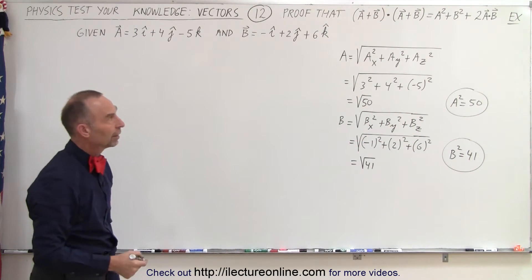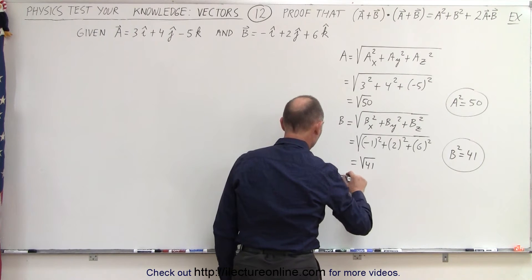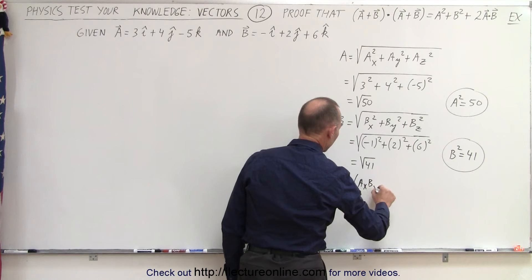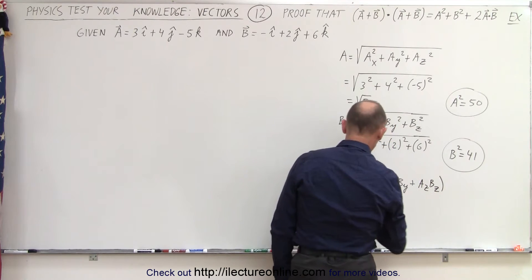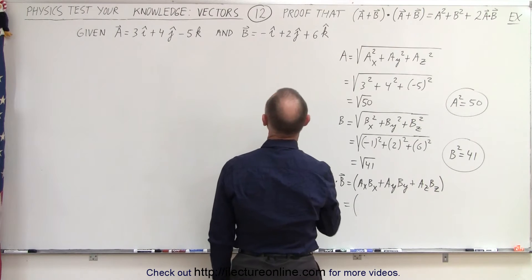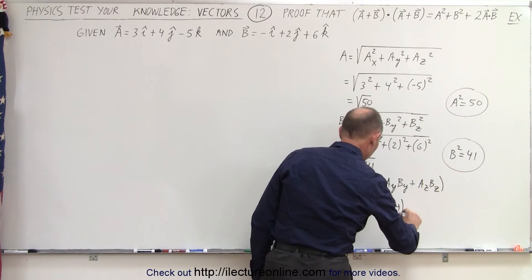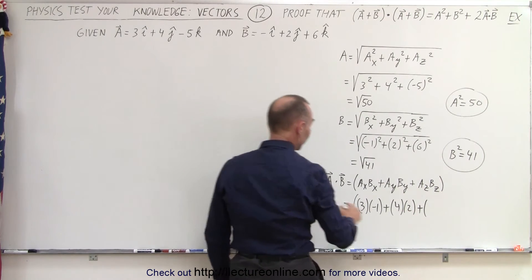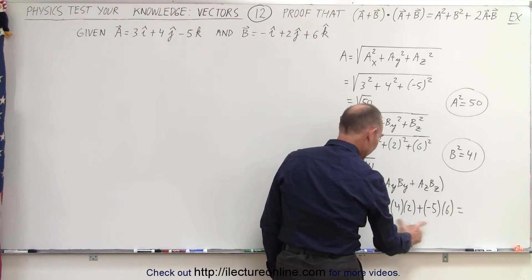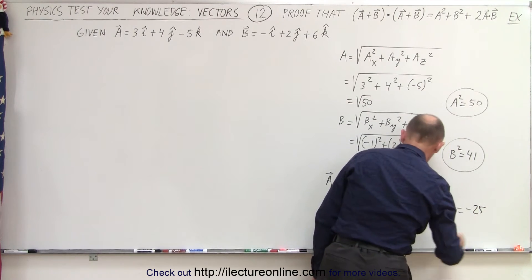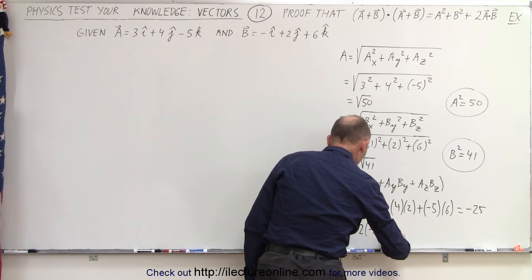Now we have A squared and B squared, so we need to perform the dot product of A and B. The dot product of A and B equals AX times BX plus AY times BY plus AZ times BZ. That is 3 times negative 1, plus 4 times 2, plus negative 5 times 6, which gives negative 3 plus 8 plus negative 30, equal to negative 25. So 2 times the dot product of A and B equals 2 times negative 25, which is negative 50.